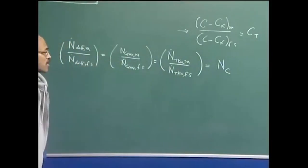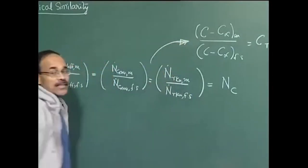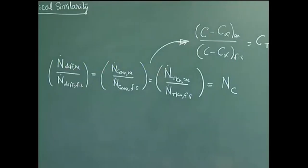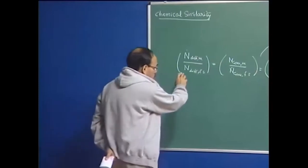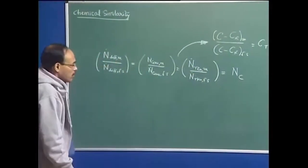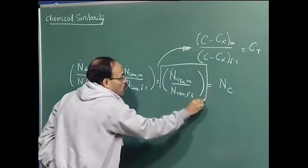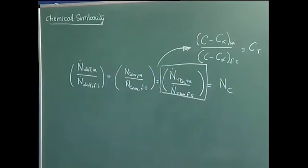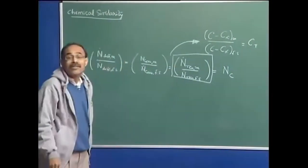This condition is to be satisfied, and once this condition is satisfied the consequence is similarity in concentration profile. We must understand that it is very difficult to satisfy this because of the involvement of the term which talks about mass transport due to species distribution from chemical reaction. We know that the rate of chemical reaction depends on temperature.